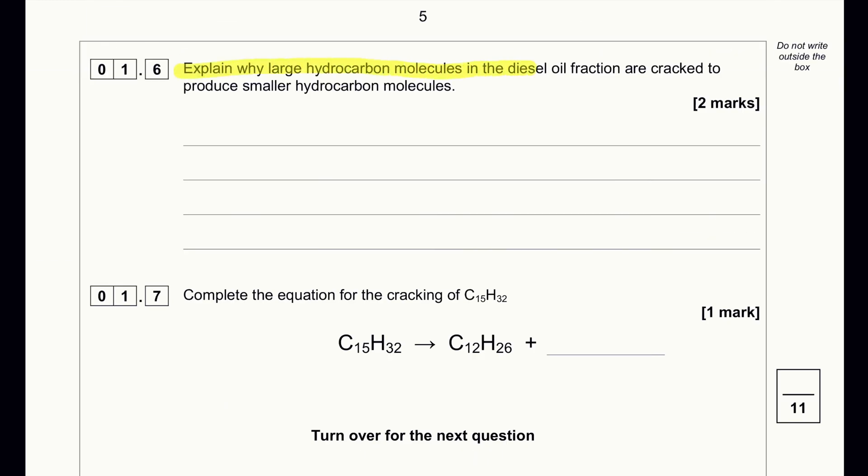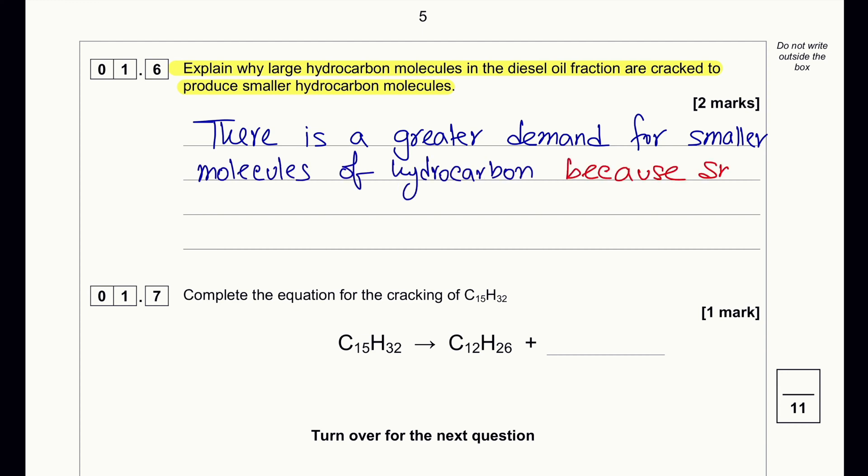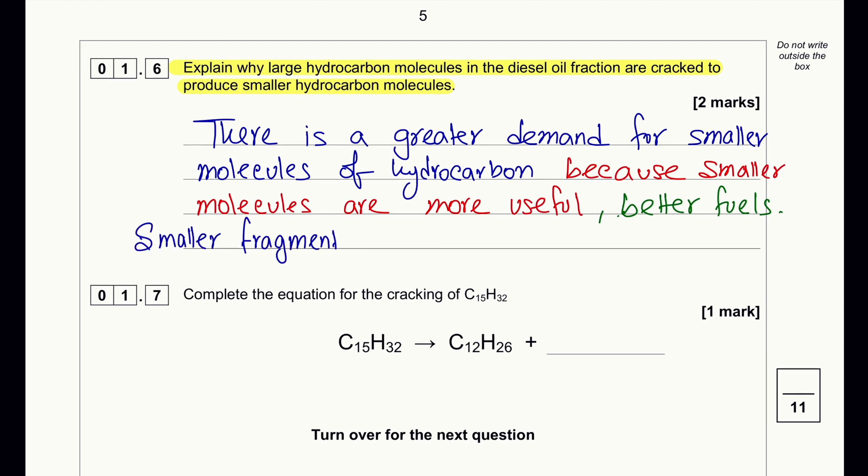Explain why large hydrocarbon molecules in the diesel oil fractions are cracked to produce smaller hydrocarbon molecules. There is a greater demand for smaller molecules because smaller molecules are more useful. They are better fuels. They are used to make alkenes which then can be turned into polymers.